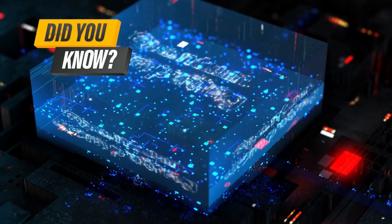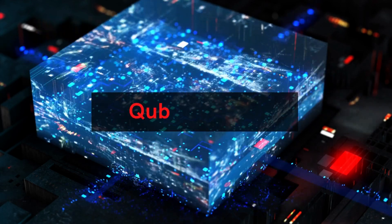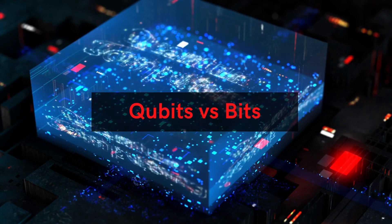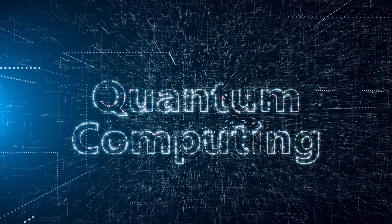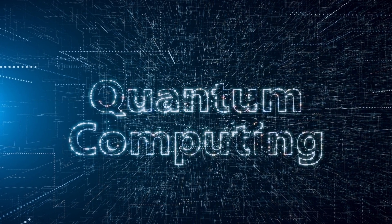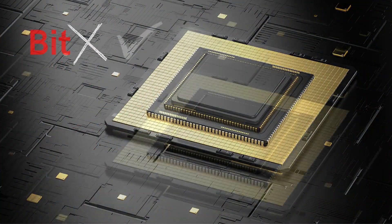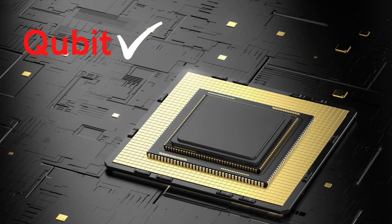Did you know quantum computers process data in qubits instead of just bits? In quantum computing, the smallest unit of data is not the bit but the qubit based on something like the spin of a magnetic field.